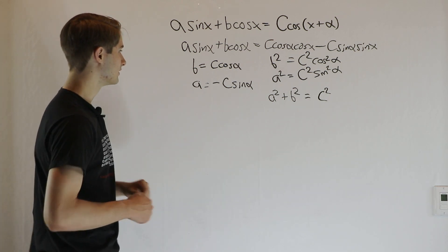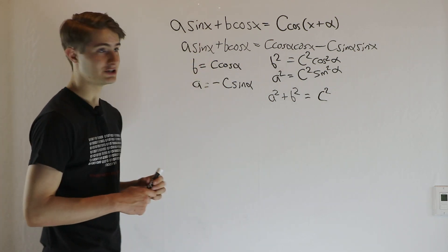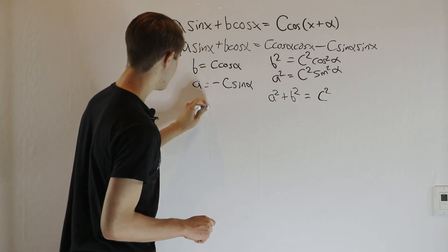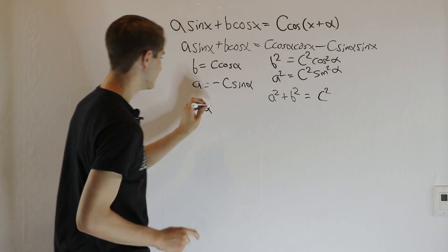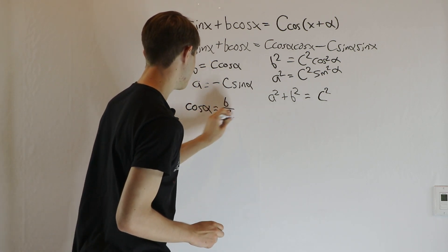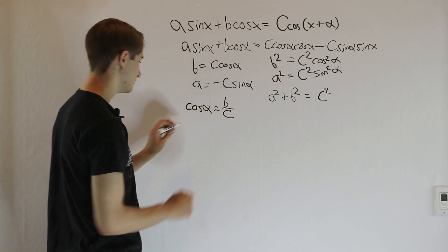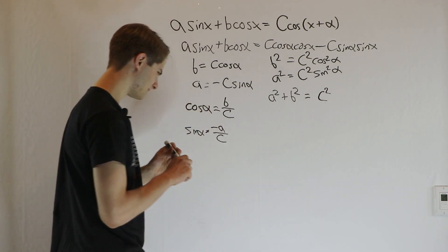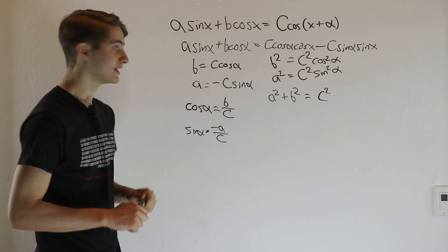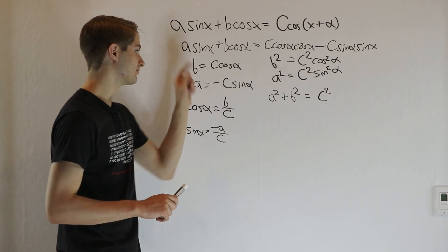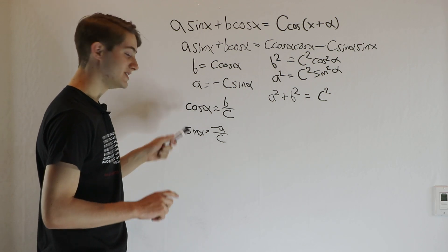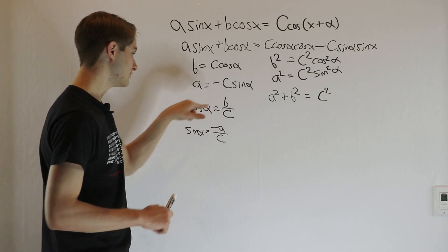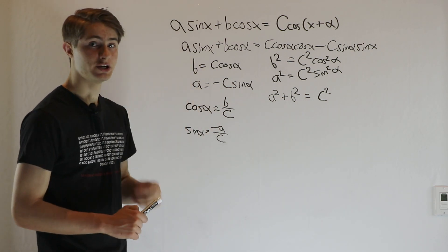In order to solve for alpha, we're going to look at both of these equations separately. For the first one, let's solve for cosine alpha — dividing by c, we get cosine alpha equals b over c. And on the second one, solving for sine alpha, we get that it's negative a over c. Some people like to divide these two equations and get a formula for tangent alpha, but using these separately is easier because it helps us figure out what quadrant we're in. We can use one to solve for the specific angle, and then use the other to check the quadrant.